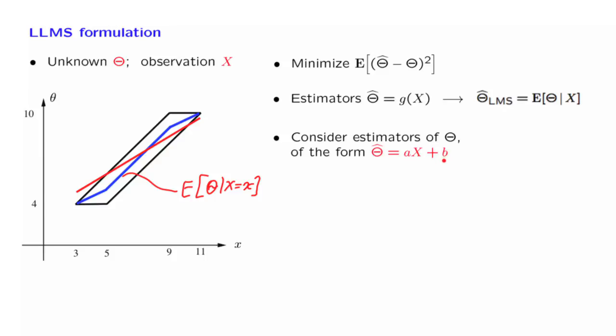Now, a and b here are some parameters that are for us to choose. If I choose a and b differently, I'm going to get a different red curve here. Which one is the best red curve? Well, we need a criterion. But let us stick to our mean squared error criterion. And in that case, we are led to the following formulation.